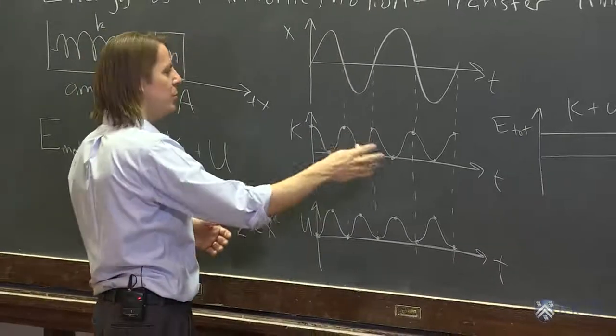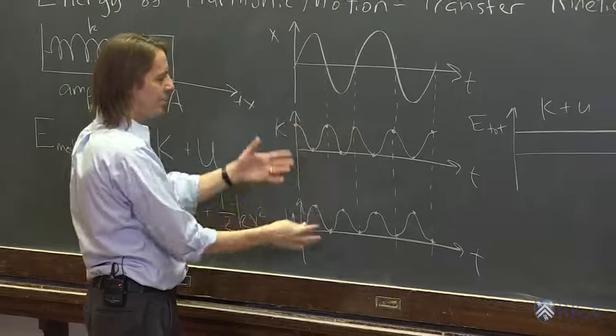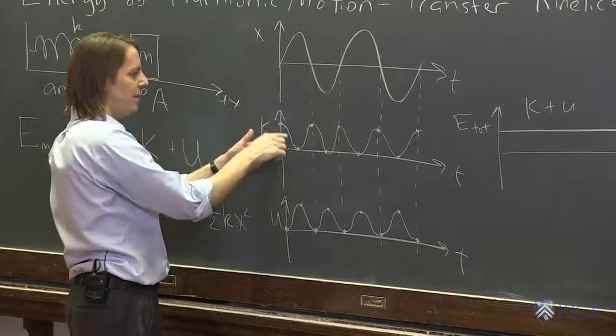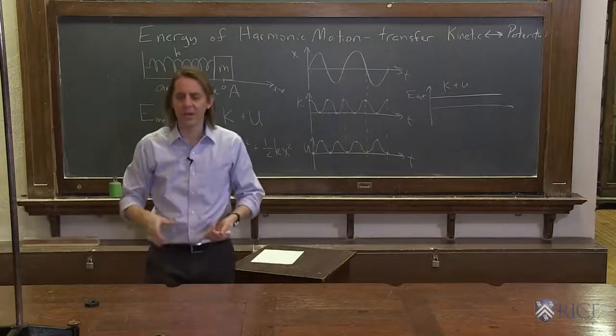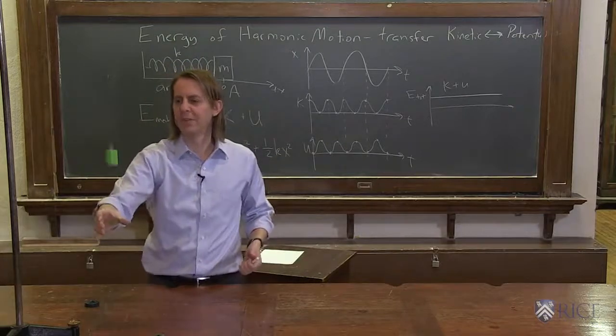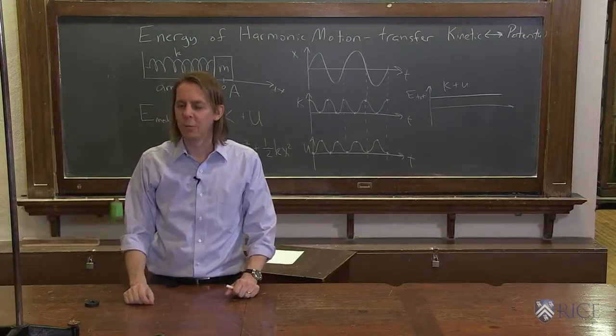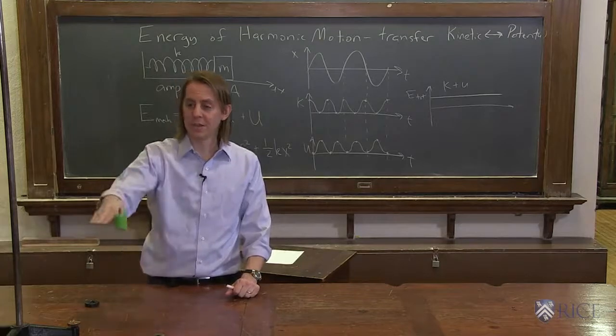The energy oscillates between kinetic and potential. At some points, it's all kinetic. At some points, it's all potential. But the total is constant. If we look at the mass on the spring move, we can imagine that this is true. The point where it is all potential is when it stops, and there's no kinetic.